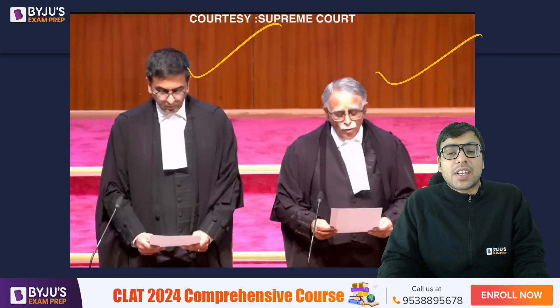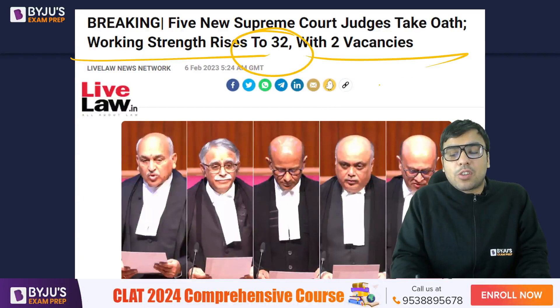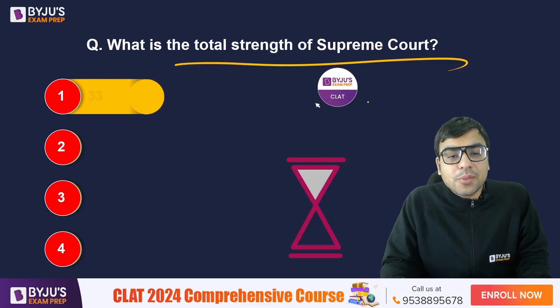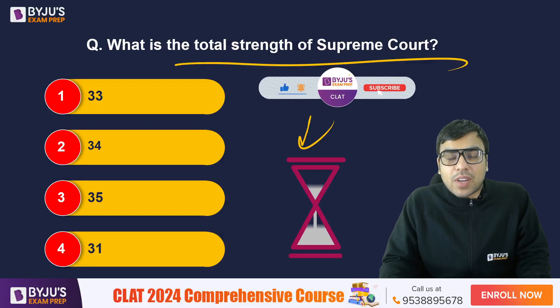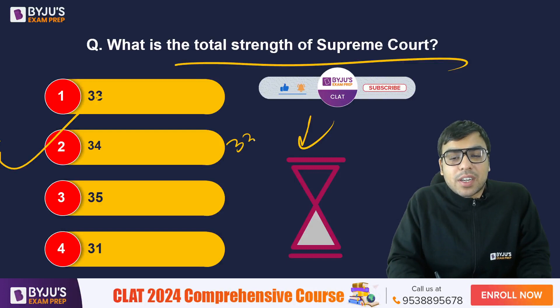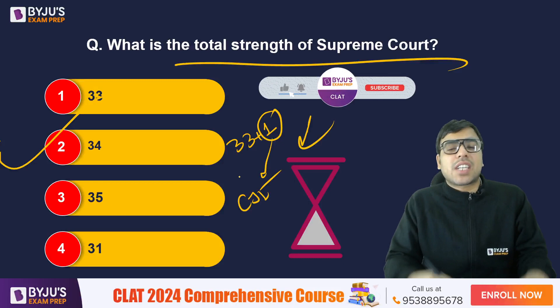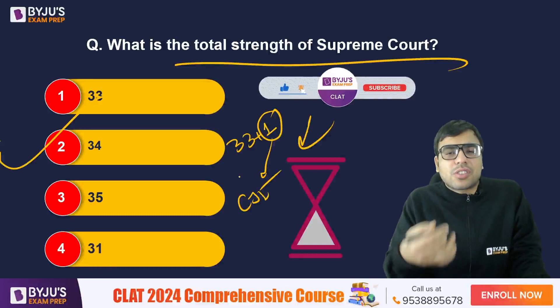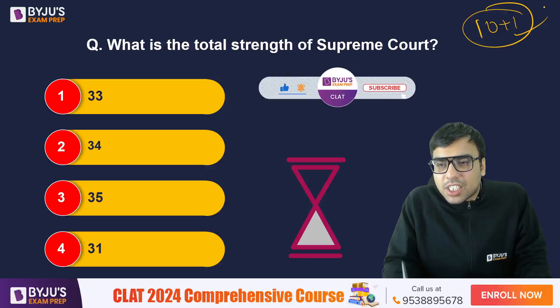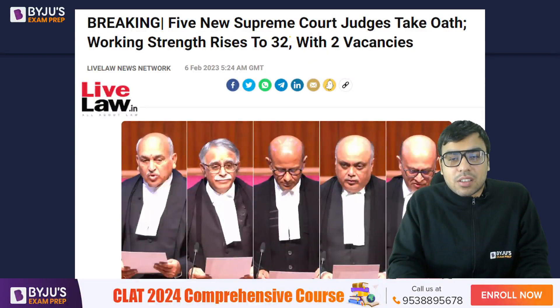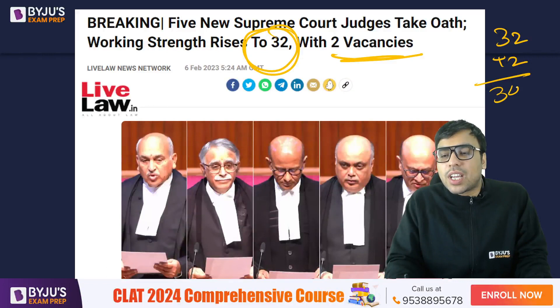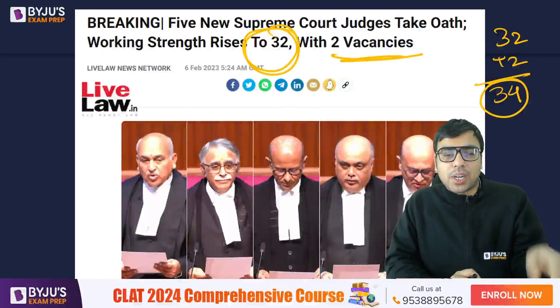Five new Supreme Court judges took their oaths, and the strength rises to 32 with two vacancies remaining. Question: What is the total strength of the Supreme Court? Options: A) 33, B) 34, C) 35, D) 31. The right answer is B — 34. This is 33 judges plus 1 Chief Justice of India, who is also a judge but serves as the head. Just like a cricket team has 10 plus 1, the total here is 34. Currently there are 32 judges with 2 vacancies, so 32 plus 2 equals 34, meaning two more judges can still be appointed.